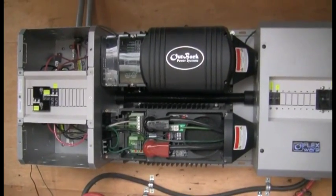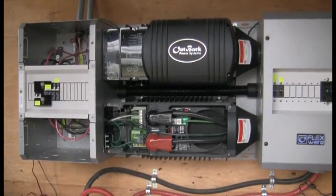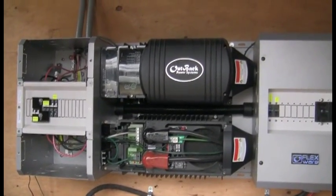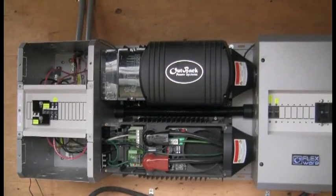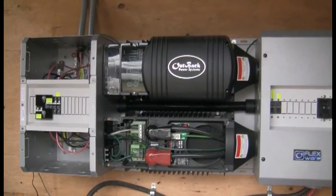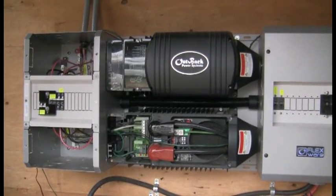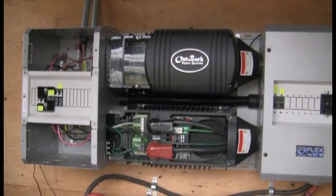The top inverter is wired into the black bus bar, the bottom into the red bus bar on the AC side. Depending on what side of the bus bar a load is present, that determines which inverter is actually supplying the load.